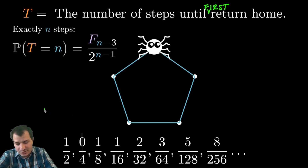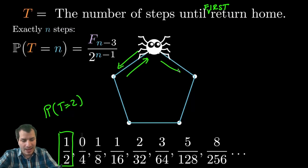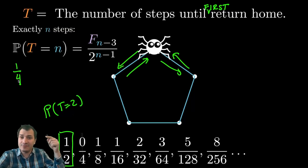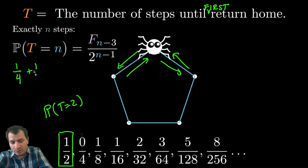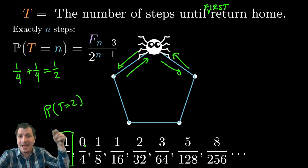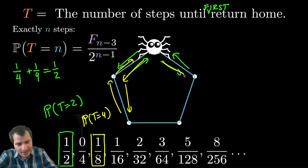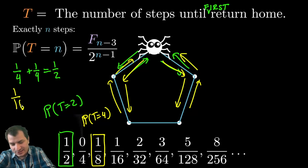For example, the probability that he gets back home in exactly two steps is one half. There are two different ways he can get home in two steps: he can either go out and back immediately on the left, or out and back immediately on the right. That's a one-quarter chance plus a one-quarter chance, which is exactly one half. If you ask what is the probability he gets home in three steps, the answer is zero — there is no way the spider can leave his house and come back in exactly three steps, just by the geometry of the picture.